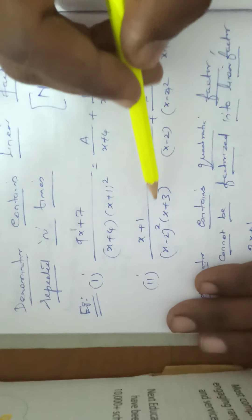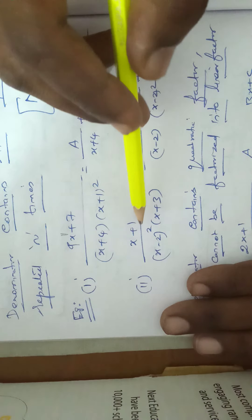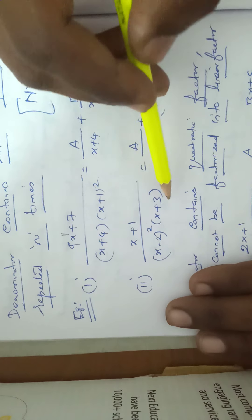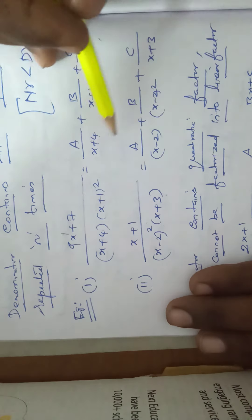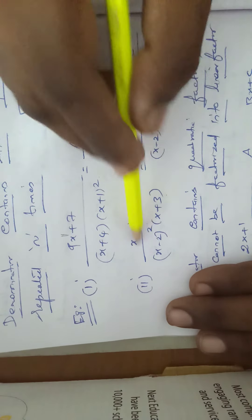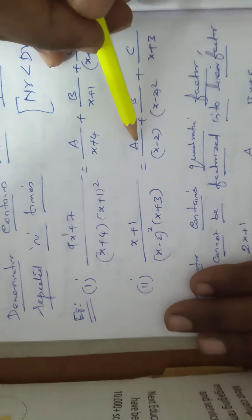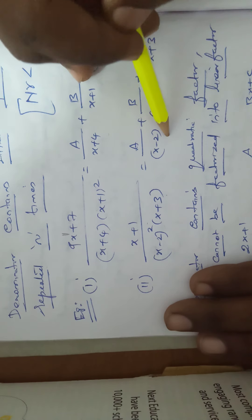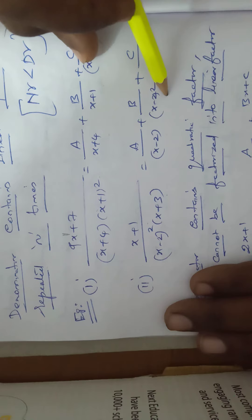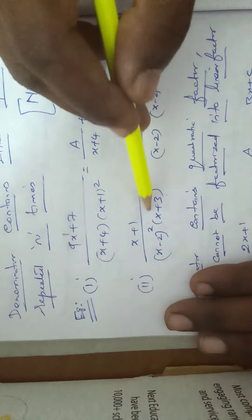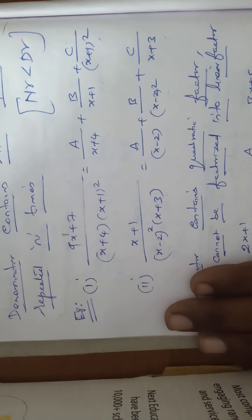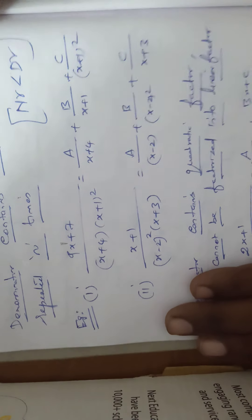Second example: (x + 1)/[(x - 2)²(x + 3)]. Since (x - 2)² is a squared term, this is resolved as A/(x - 2) + B/(x - 2)² + C/(x + 3).